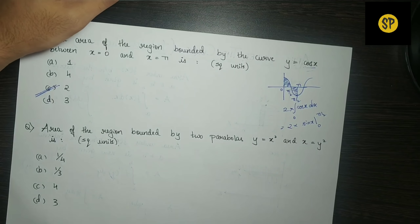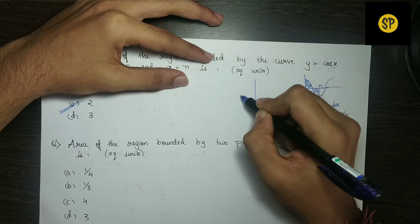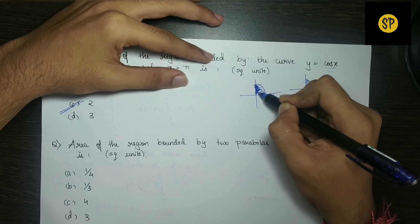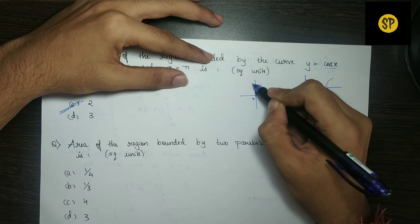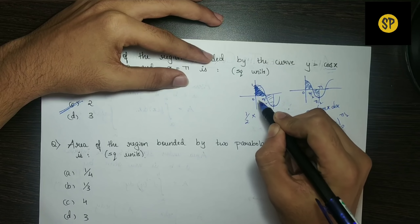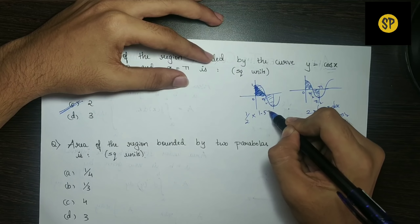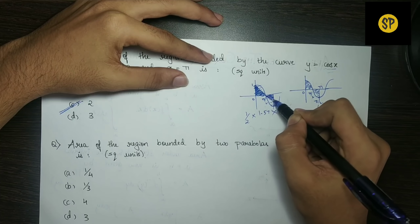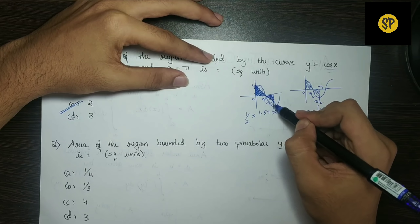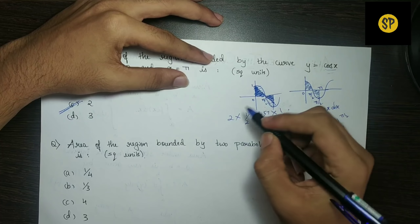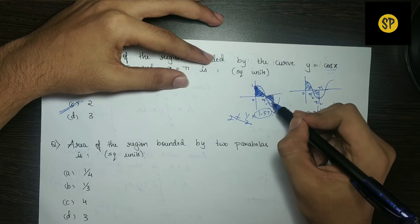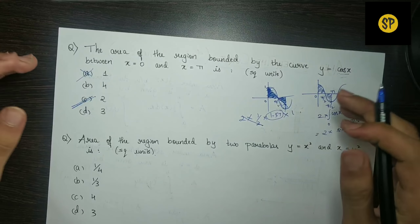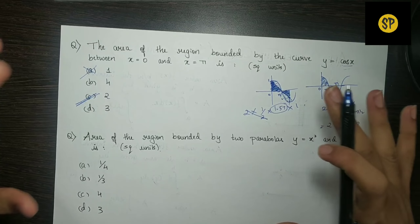For the second question, here is a shortcut trick. Consider the same curve and form a triangle from the area. The triangle has vertices at pi by 2, 0, and 1 (since the maximum cos value is 1). The triangle area is half into base into height = half into (pi/2) into 1 = pi/4, approximately 1.57 divided by 2. There are 2 such triangles, so 2 cancels with the denominator, giving approximately 1.57 — but through the calculation, the answer works out to 2.